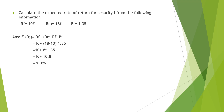Now we have a question: risk-free rate of return is 10%, market return is 18%, and beta coefficient is 1.35. We just put the values into the equation. Expected rate of return equals risk-free rate of return (10%) plus market return (18%) minus risk-free rate of return (10%), multiplied by beta (1.35).